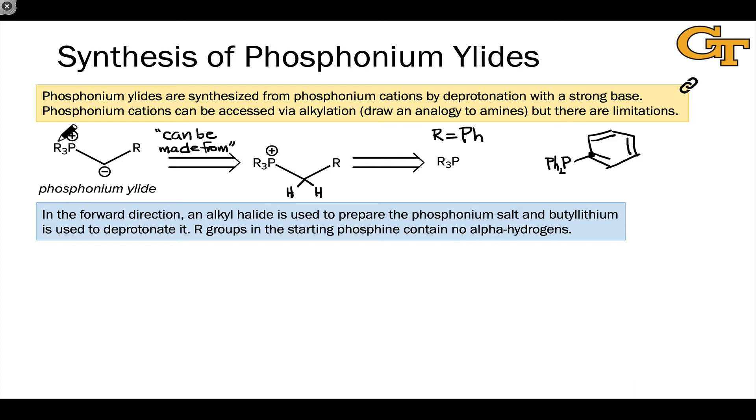So by starting with a phosphine like triphenylphosphine, and doing just a straightforward SN2 alkylation in the first step, and then deprotonating or doing a proton transfer in the second step, we can generate a phosphonium ylide. Let's write out that synthesis in the forward direction, as it's going to reveal some important limitations of this synthetic method.